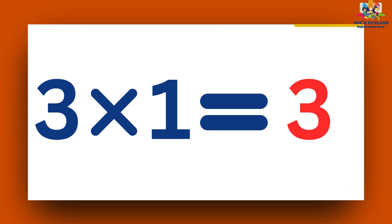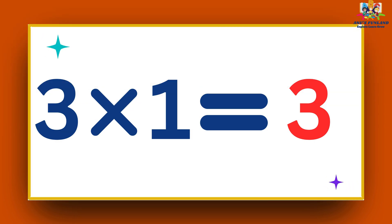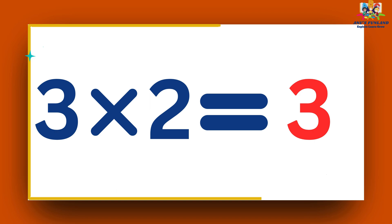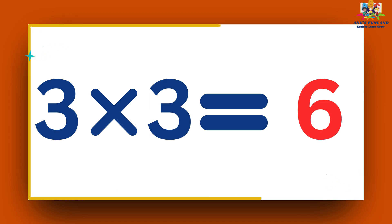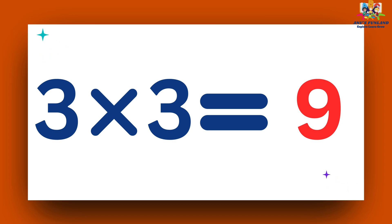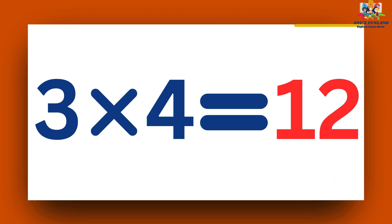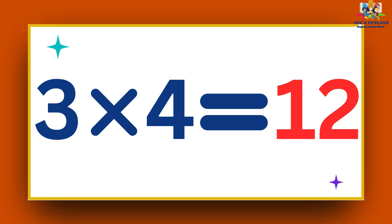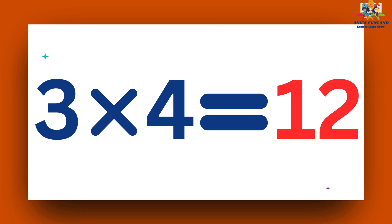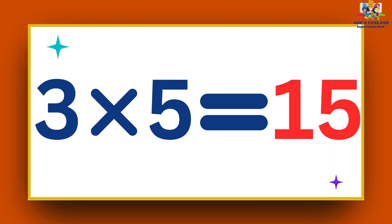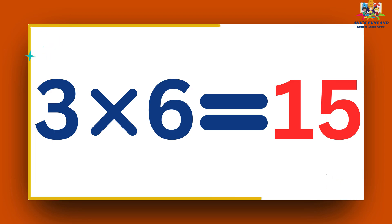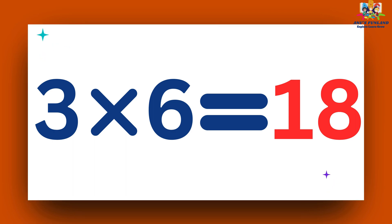Three ones are three. Three twos are six. Three threes are nine. Three fours are twelve. Three fives are fifteen. Three sixes are eighteen.